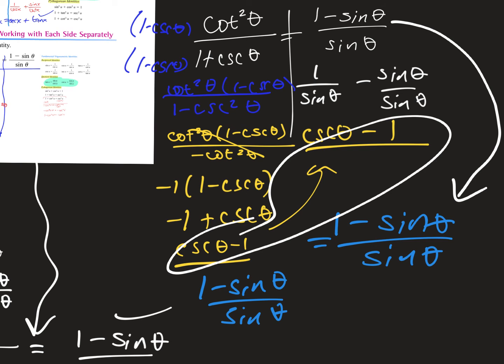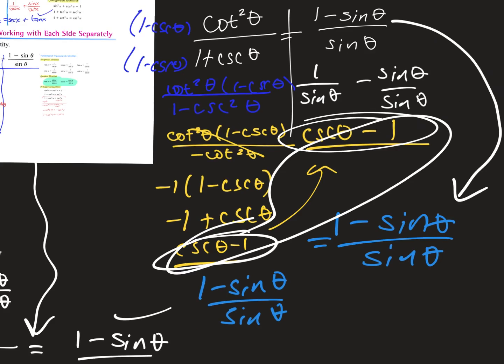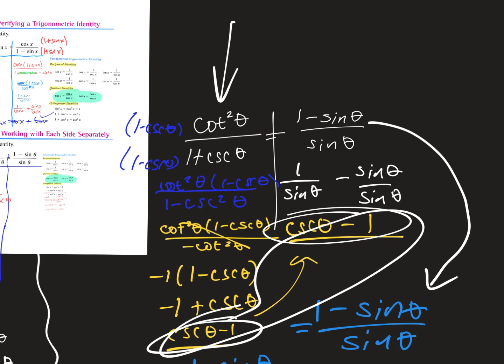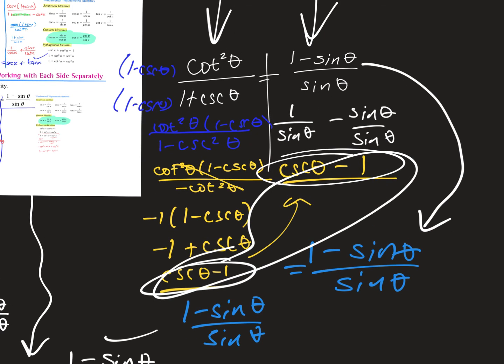Sometimes that's helpful when there's a lot going on on both sides. Most of the time though, you'll just stick with one side and simplify it until it matches the other. These problems are not the exact same every single time, but always try to do something. I would not want you to end partway through — your end answer should be one of the things you started with equaling the other one. So your answer should show cotangent squared theta over one plus cosecant theta equal to one minus sine theta over sine theta.